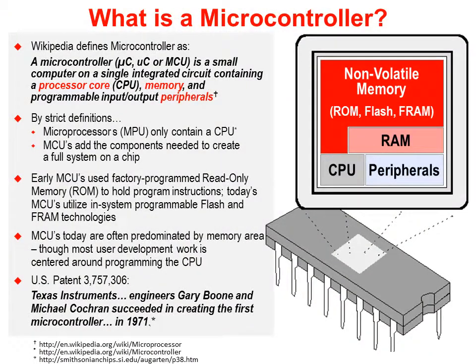What is a microcontroller? It's a microprocessor with additional components — peripherals and memory — things required to turn it into a full system on a chip. Nowadays the MCU tends to be dominated by memory, and that's what we're focusing on in this chapter. By the way, Texas Instruments received the patent for the first microcontroller back in 1971.